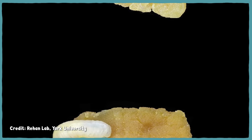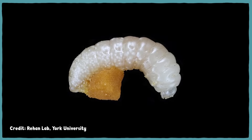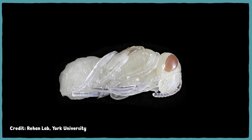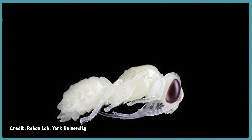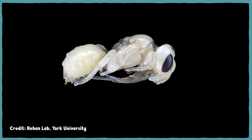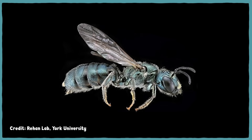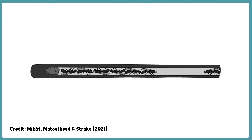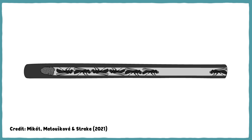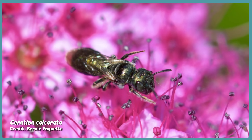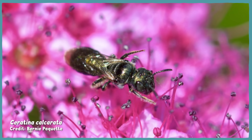As each egg hatches, the corresponding larva eats its entire pollen ball and then enters its pupal stage. Then it undergoes metamorphosis and emerges as its adult form. For C. calcarata, this process can take about six weeks, from hatching to adulthood. The whole brood then hangs out in the nest until the end of the season, while their mother keeps foraging for them until it's time to overwinter. The young ones then venture off on their own in the springtime to mate and start the process all over again.